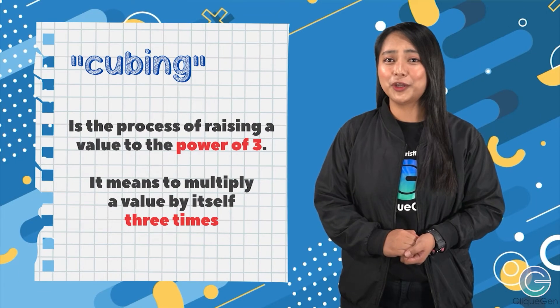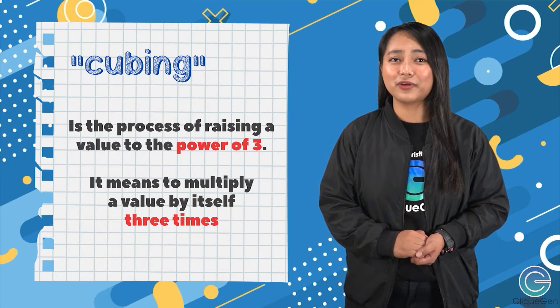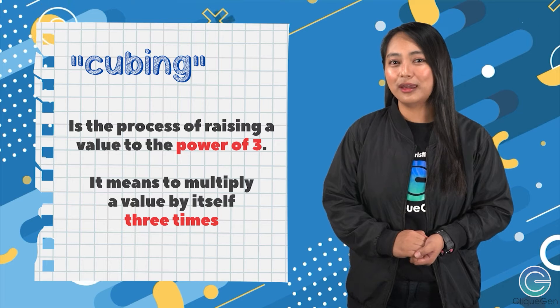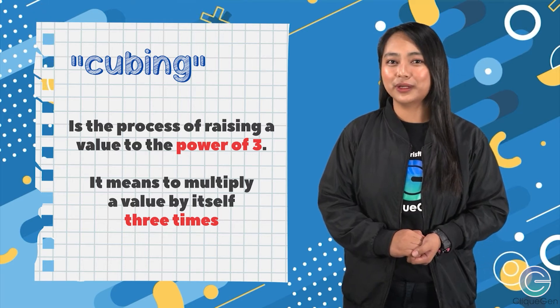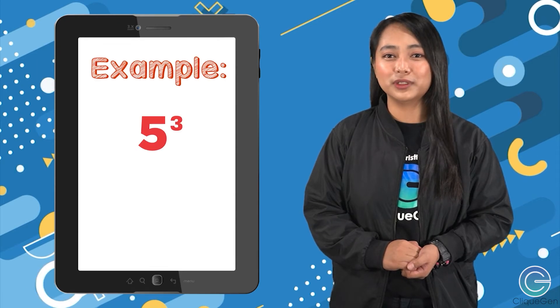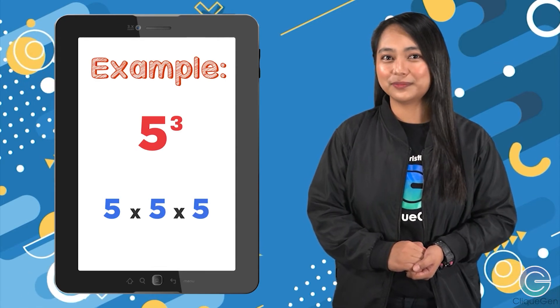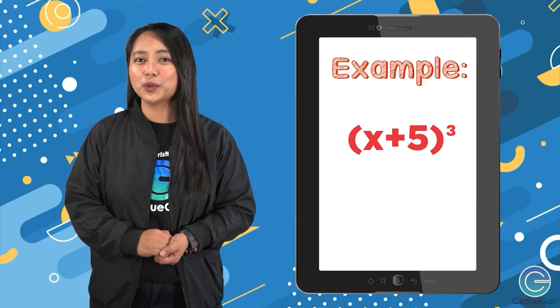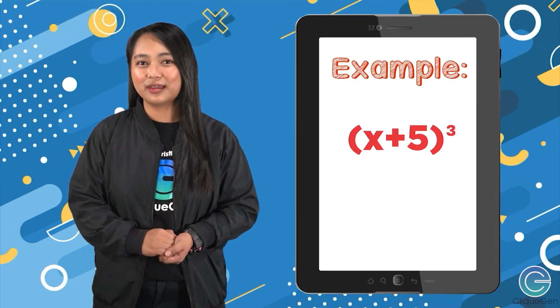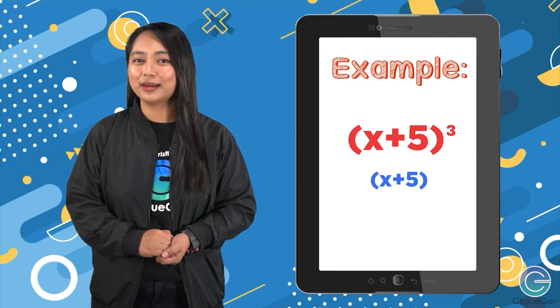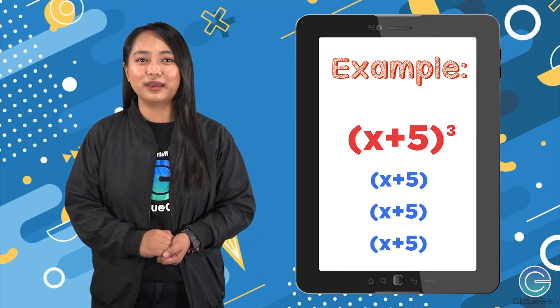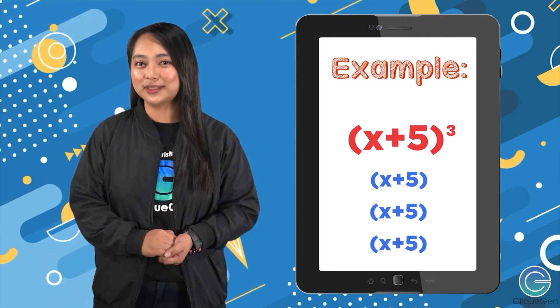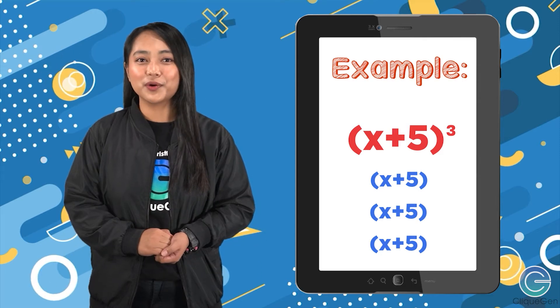Remember that cubing is the process of raising a value to the power of three — it means to multiply a value by itself three times. For example, five cubed means five times five times five. The same goes with the cube of x plus five: this simply means the quantity x plus five, times the quantity x plus five, times the quantity x plus five.